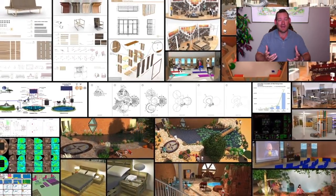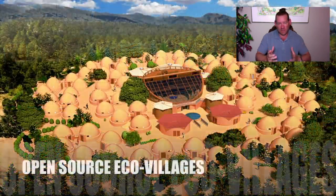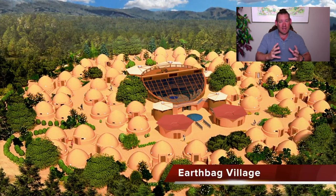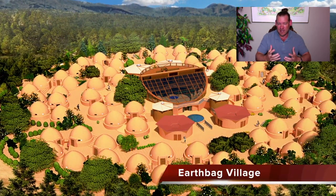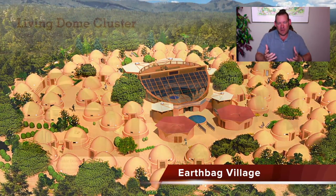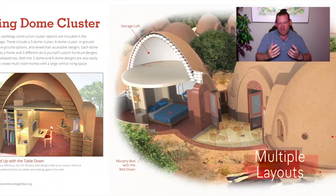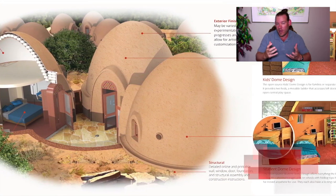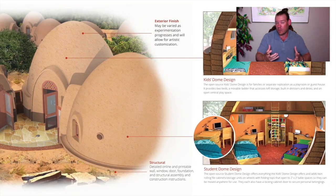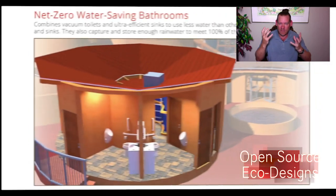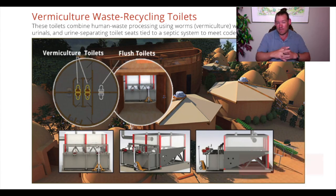Our idea is that if we can open source and free share everything necessary for replication, and build One Community as a place that people can come visit and experience — see what we're doing, experience the lifestyle, experience the social architecture — a couple weeks ago I did a video on connecting world change with fun, and how a more fun lifestyle can be the pathway to global transformation. A community model can be a more fun way of living, and that's a big part of the social architecture aspect of it.